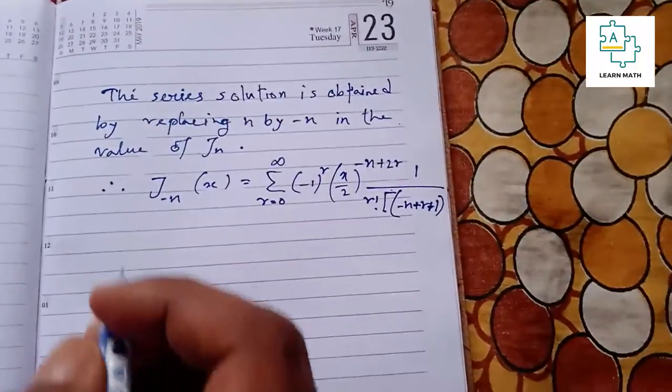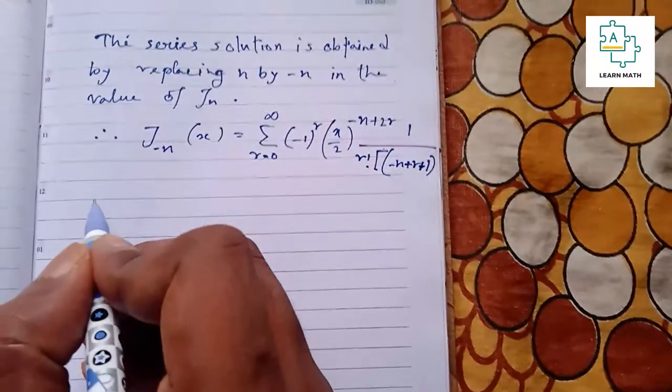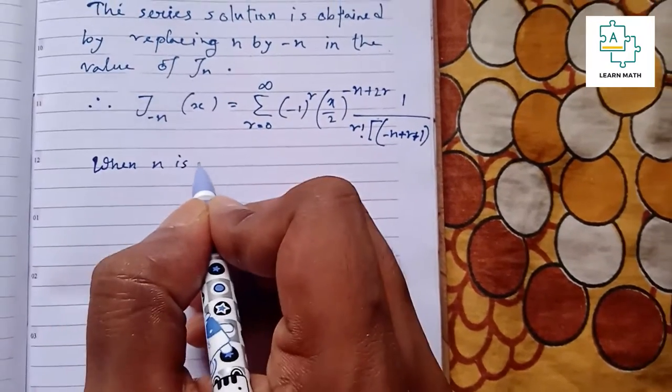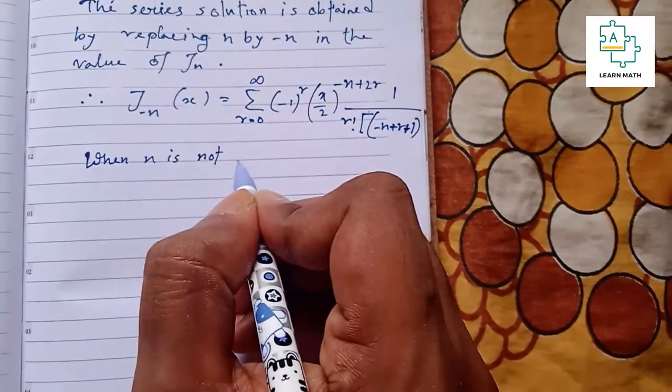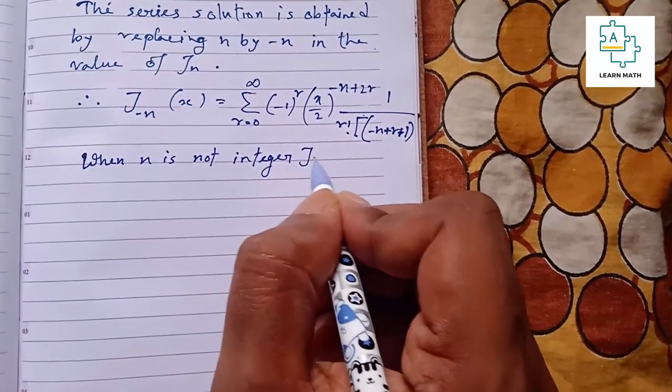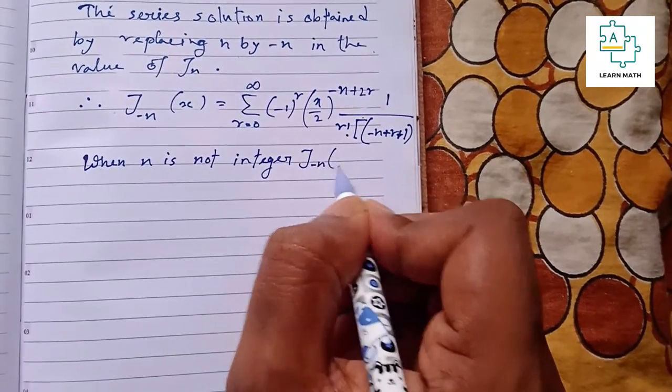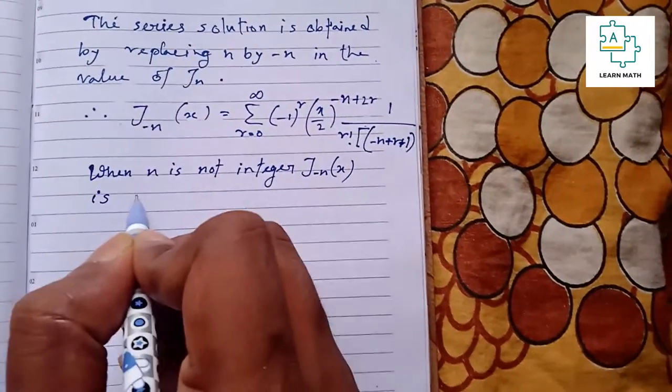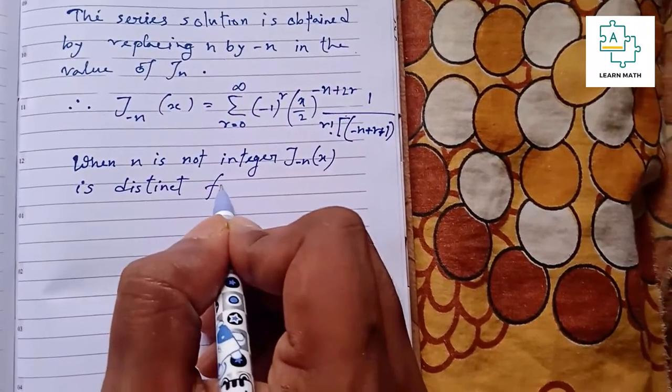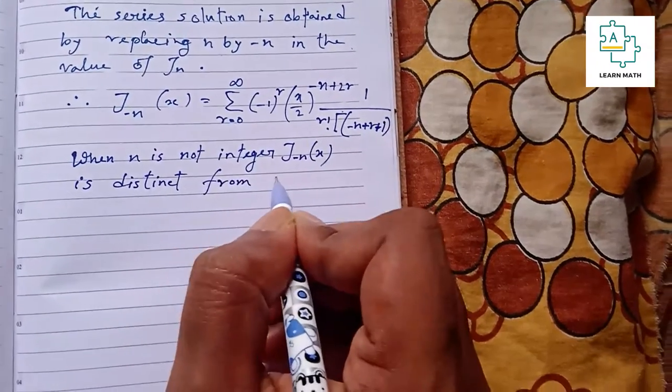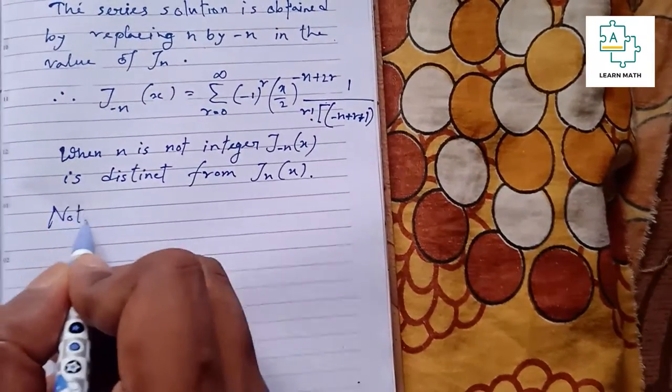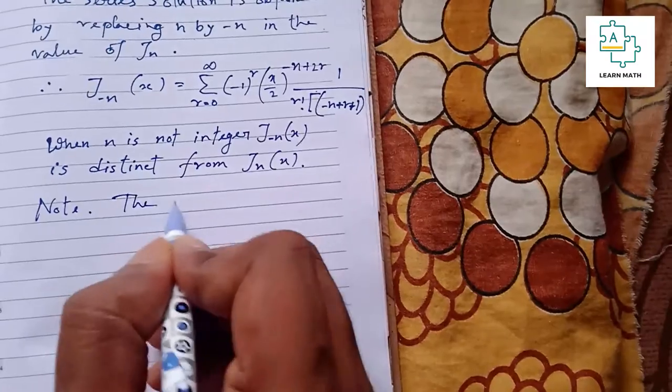When n is not an integer, J_{-n}(x) is distinct from J_n(x). Note that the solution